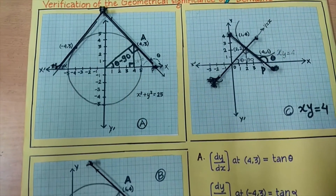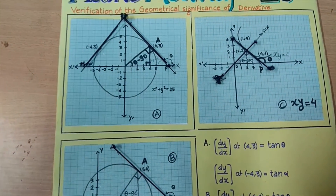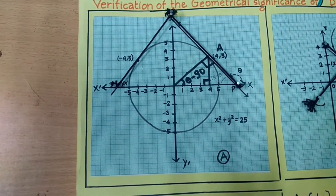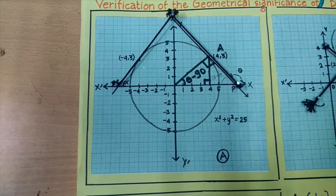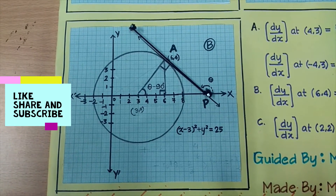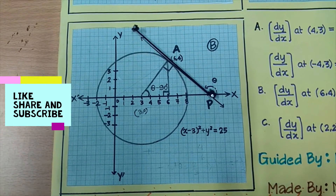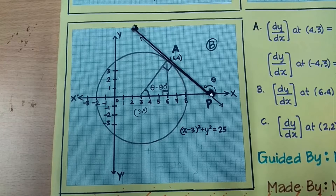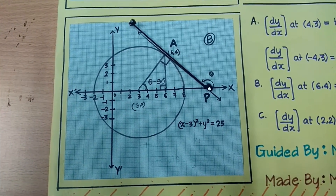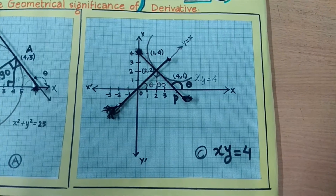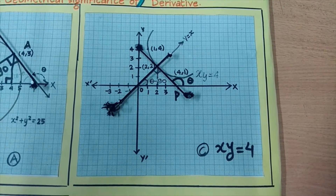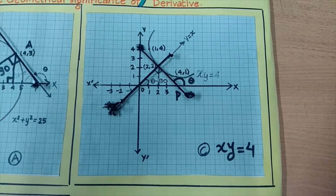Here I have taken three curves. The first one is x² + y² = 25, which forms a circle with center (0,0) and radius 5. The second one is also a circle with center (3,0) and radius 5, with equation (x−3)² + y² = 25. The third one is in the form of a hyperbola whose equation is xy = 4.